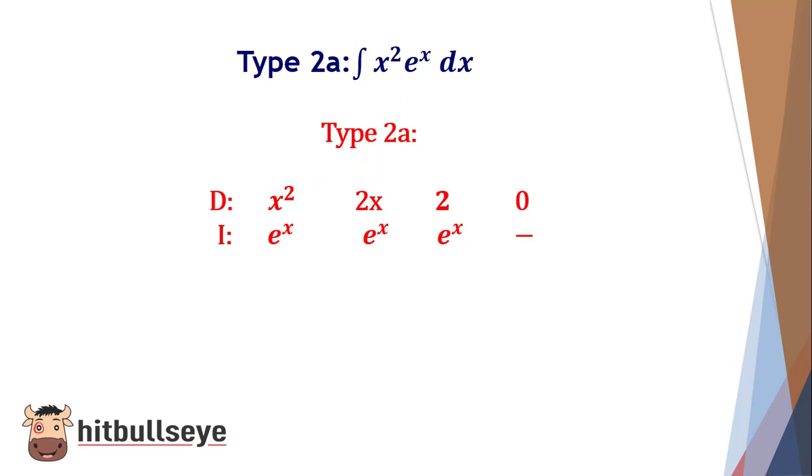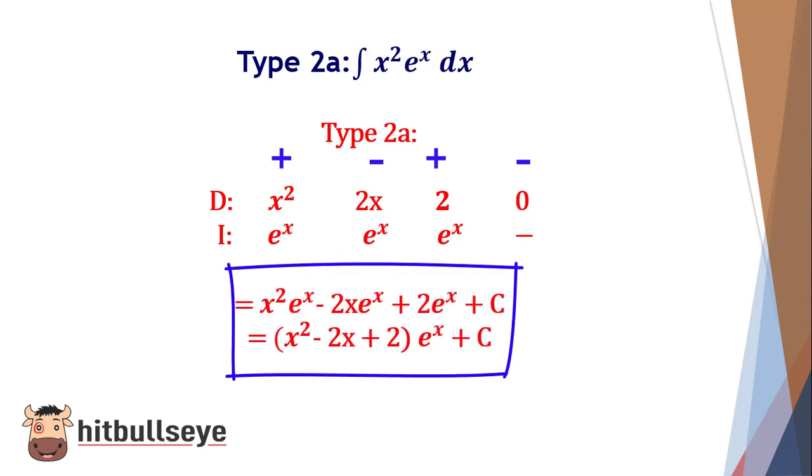Again, you just have to take care of the signs, the positive and negative signs alternate in front of these expressions and then multiply that. So the final answer you will be getting is x²e^x - 2xe^x + 2e^x + C.